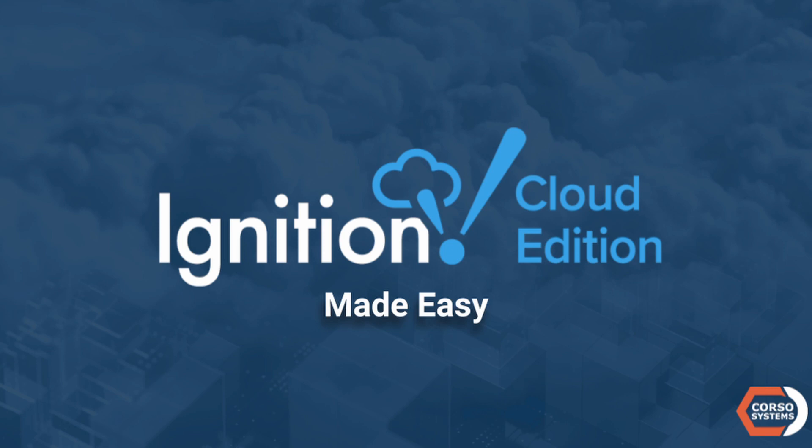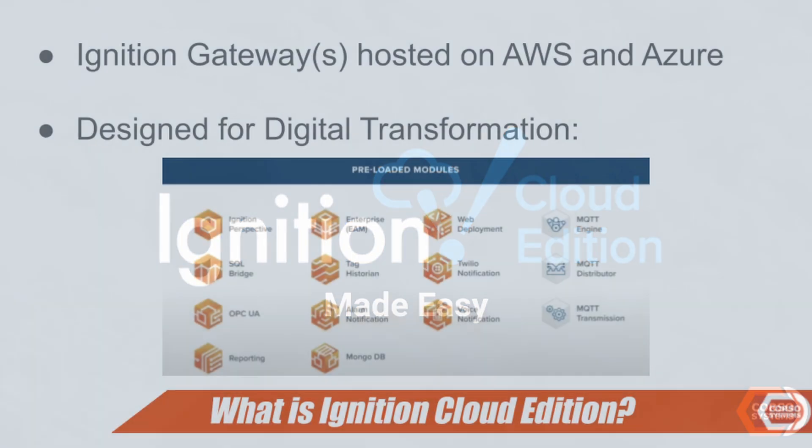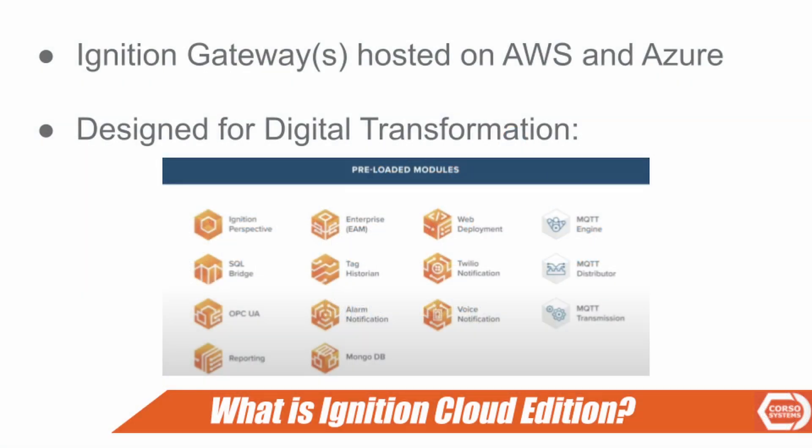Recently, Inductive Automation released Ignition Cloud Edition, which allows you to run Ignition Gateways hosted on Amazon Web Services and Azure, giving you Ignition Gateways in the cloud without having to install and manage licensing, modules, and everything you would need on a typical Ignition installation. As with any Ignition instance, it is designed for digital transformation.